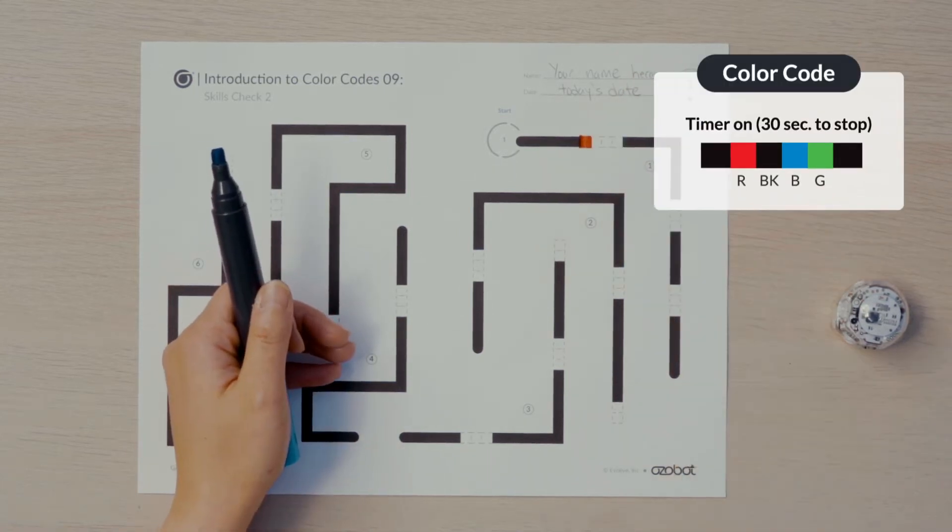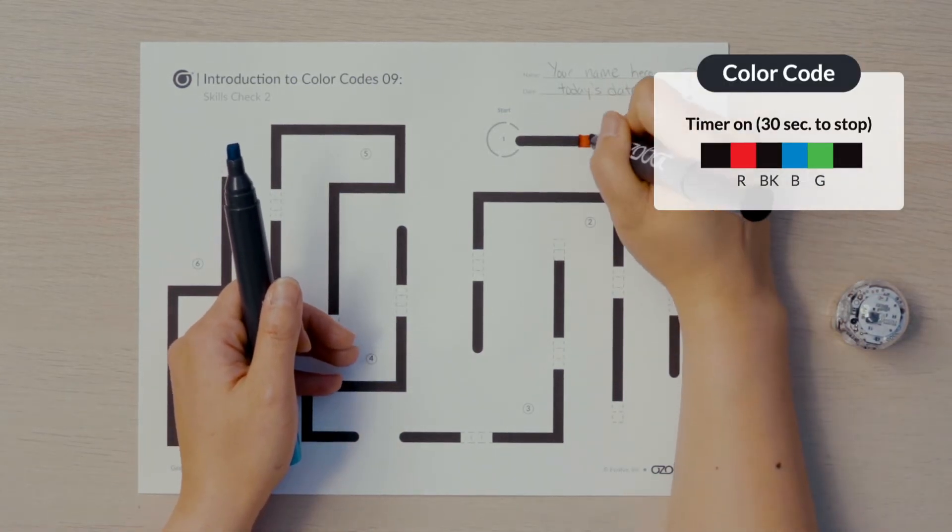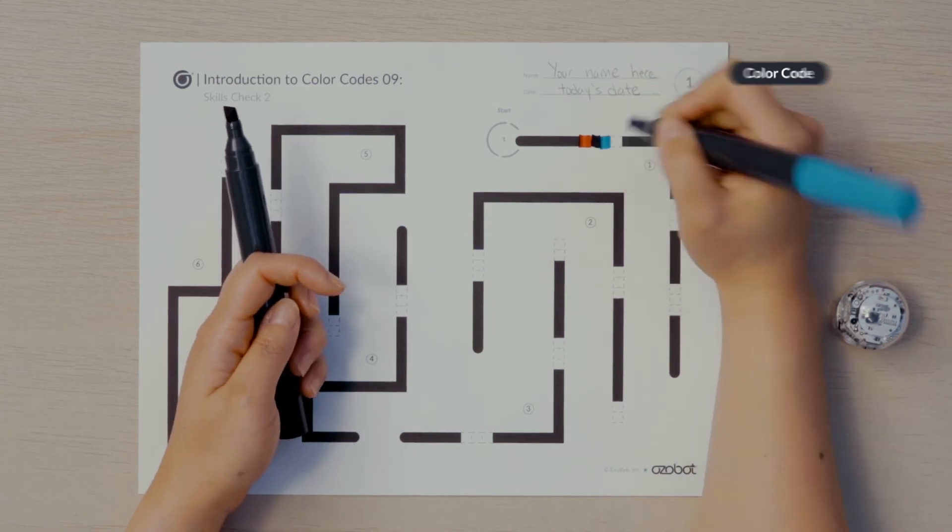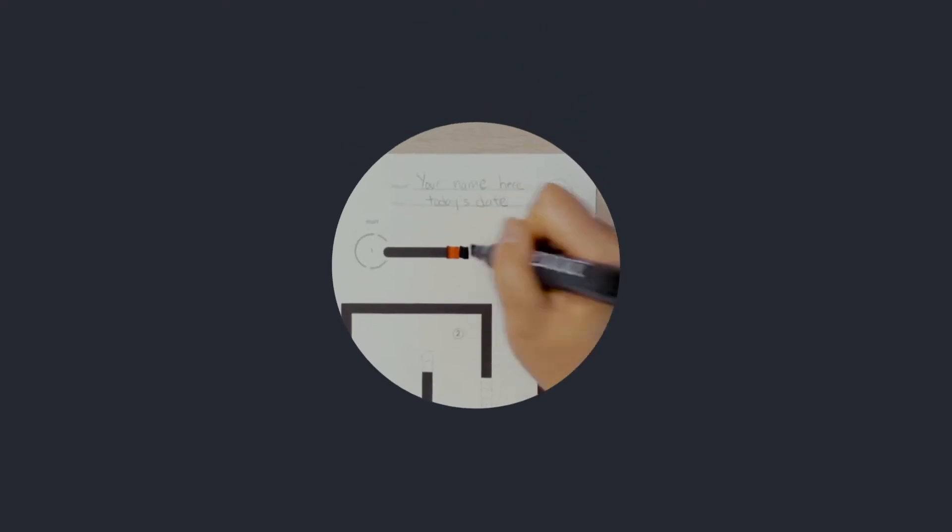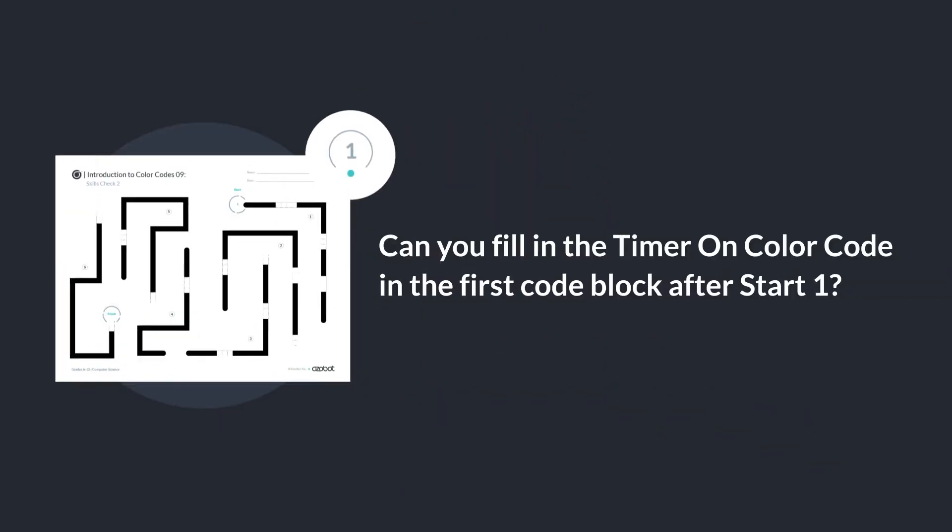I'll fill in the timer on code. You only need to include this code once to turn on the 30 second timer. Can you fill in the timer on color code in the first code block after Start 1?